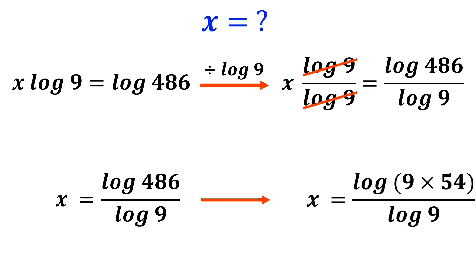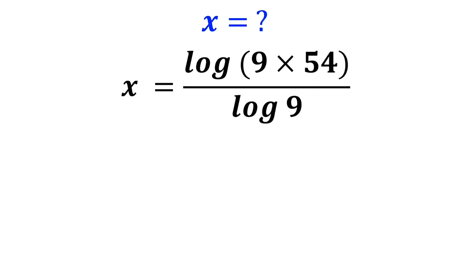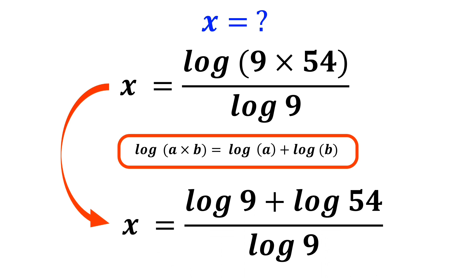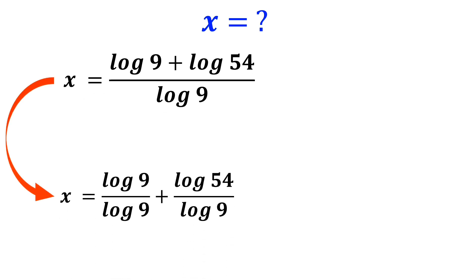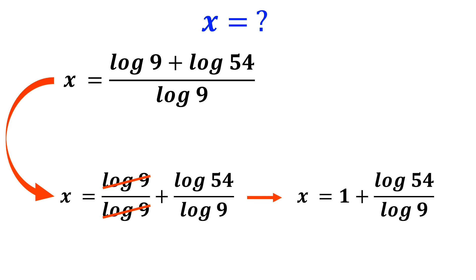We can rewrite this expression as x equals log of (9 times 54) over log of 9. Based on the logarithm rules, log of a times b equals log of a plus log of b. So we rewrite this as x equals log of 9 plus log of 54 over log of 9, which simplifies to x equals log of 9 over log of 9 plus log of 54 over log of 9. The log of 9 terms cancel out, leaving x equals 1 plus log of 54 over log of 9.